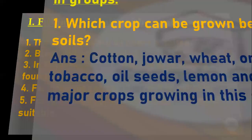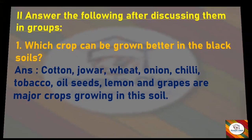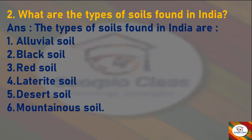Now let's move to the next main: Answer the Following Questions. The first question is: which crops can be grown better in the black soils? Answer: Cotton, jowar, wheat, onion, chili, tobacco, oil seeds, lemon, and grapes are the major crops grown in this soil.